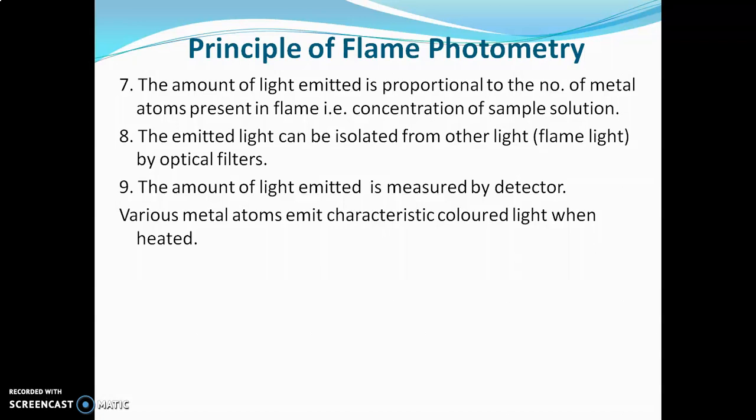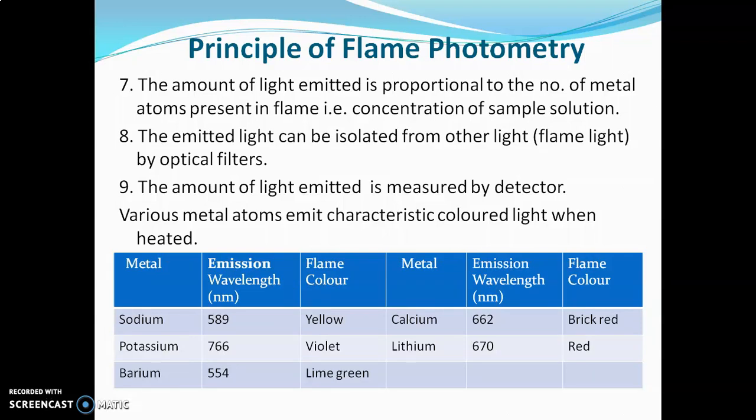Different metal atoms emit different colored lights. Sodium when heated gives yellow-colored light at 766 nm. Barium gives lime green-colored light at 554 nm. Calcium gives brick red-colored light at 662 nm, and lithium gives red-colored light at 670 nm wavelength.